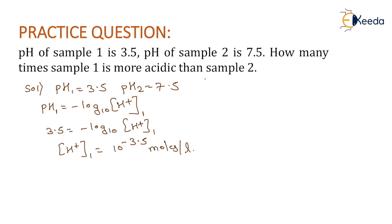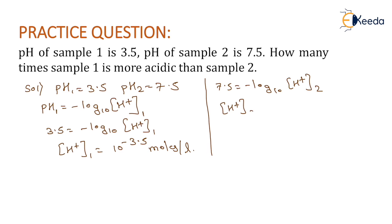In the same way, we determine the concentration of H⁺ for sample 2. Using 7.5 = -log₁₀[H⁺]₂, the concentration of H⁺ of sample 2 comes out as 10 to the power of -7.5 moles per liter.